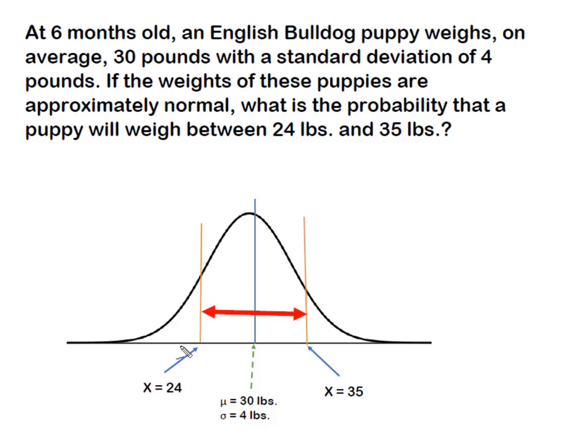So this is what our question looks like. We have our mean and our standard deviation that was given to us in the problem, and then we have two values of X. We have the 24 pounds here below the mean, and then we have 35 pounds that's up here above the mean. And the area that we're looking for is this area in between the two.